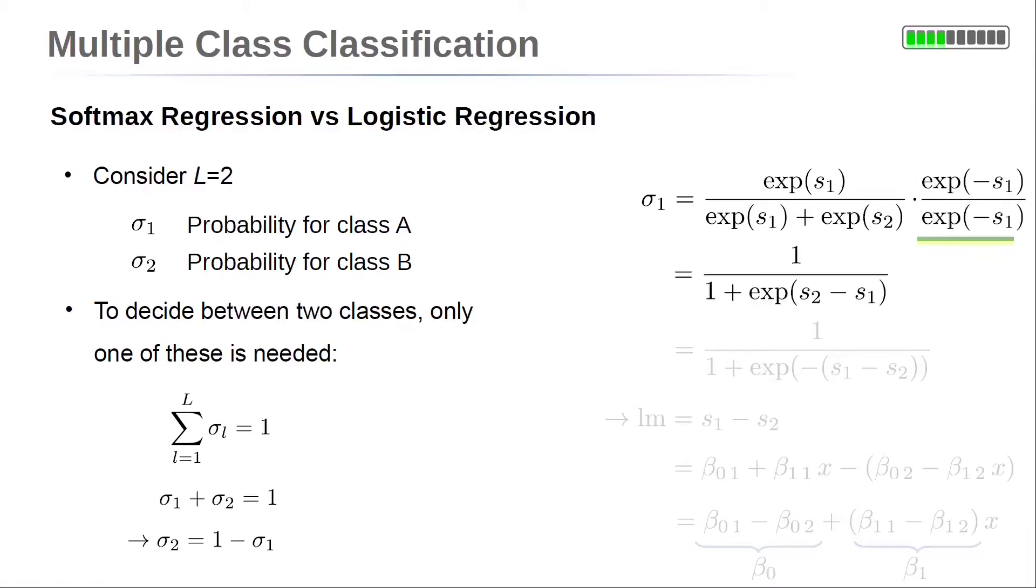Now we multiply numerator and denominator by the exponential function of the negative first linear model. The numerator simply reduces to 1. The same is true for the first term of the denominator. The second term leads to the exponential function of the difference of the two linear models. We can switch their positions, which gives an additional minus sign.